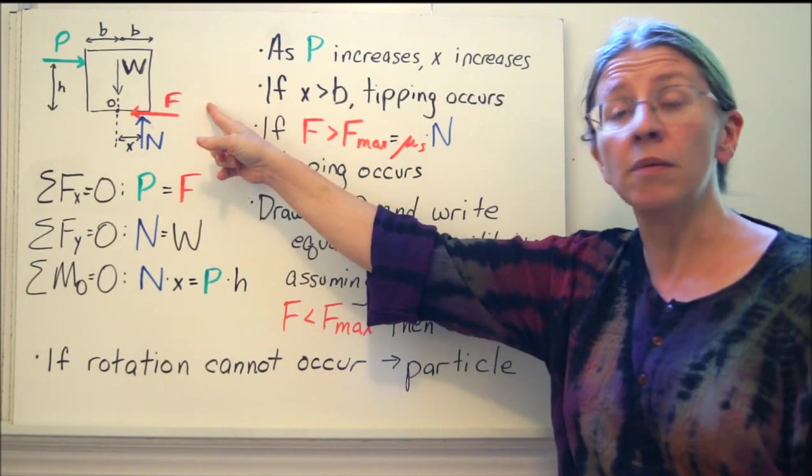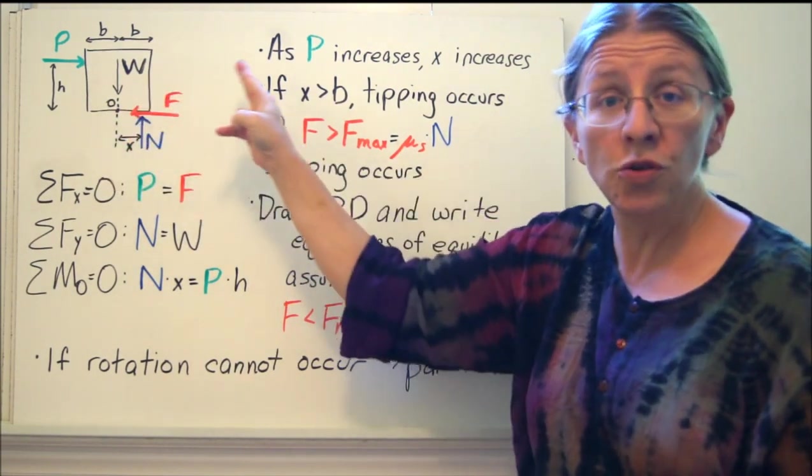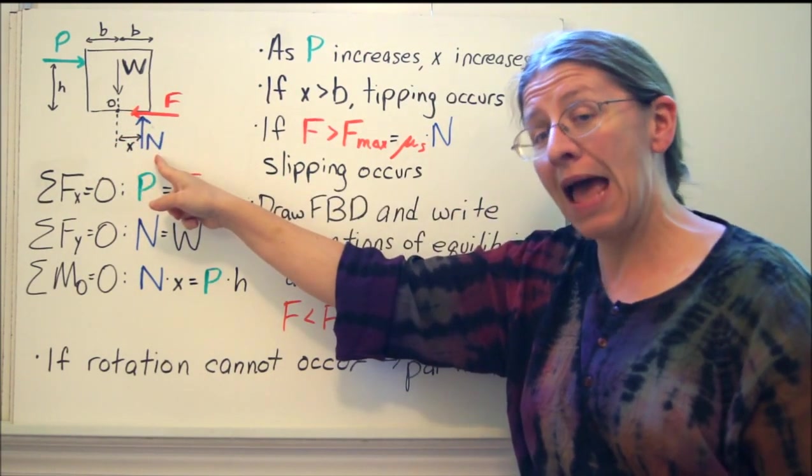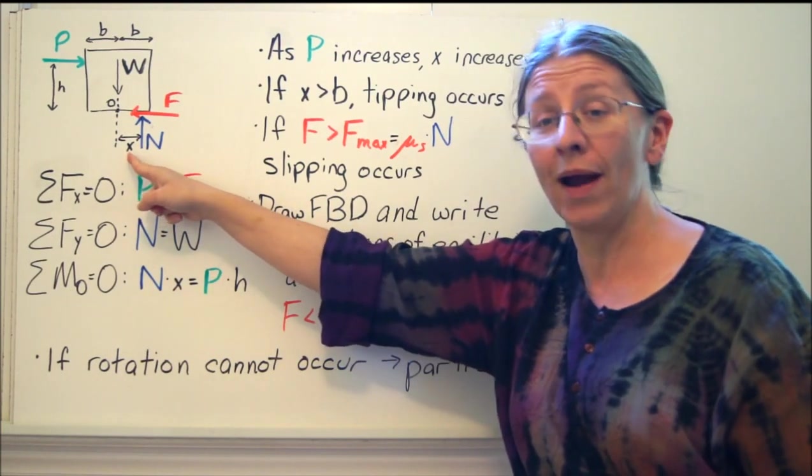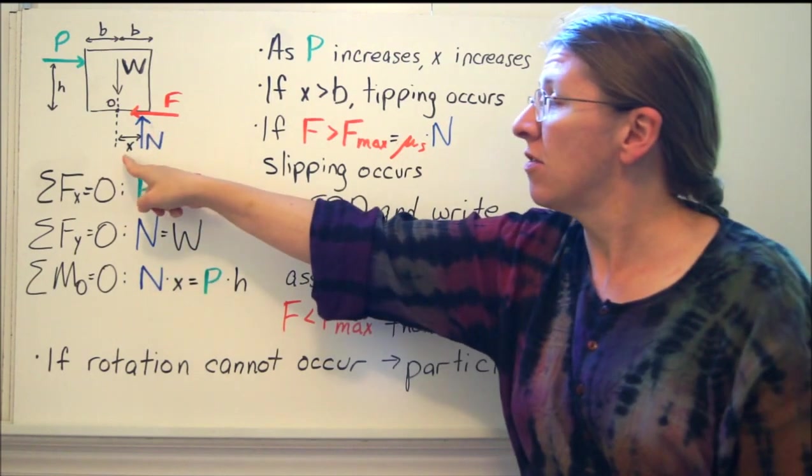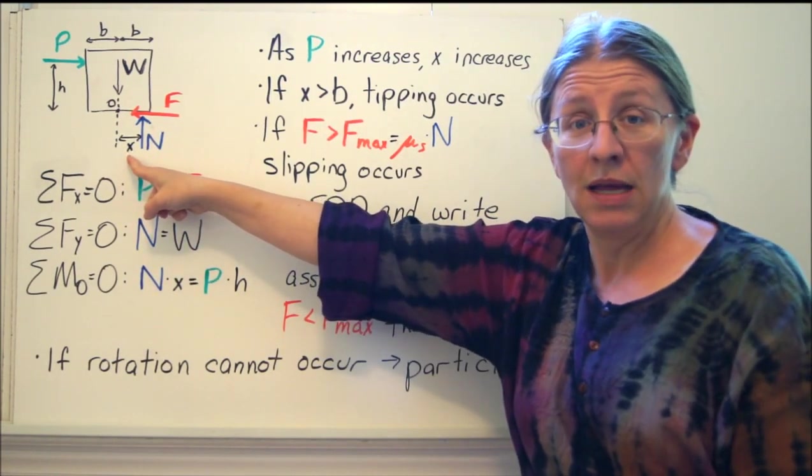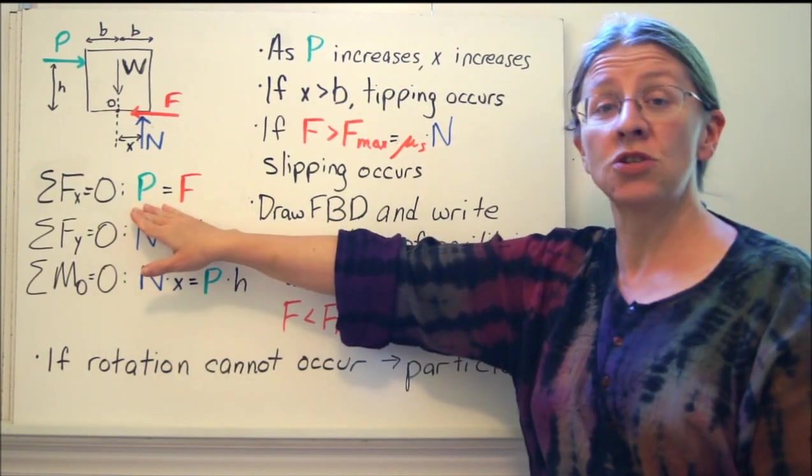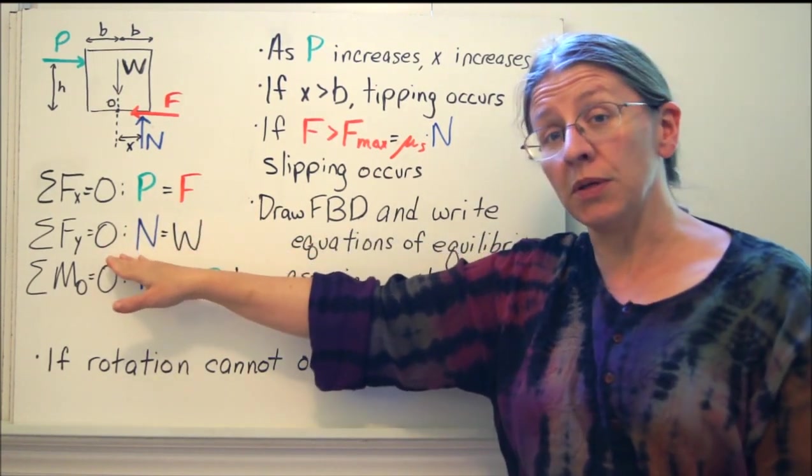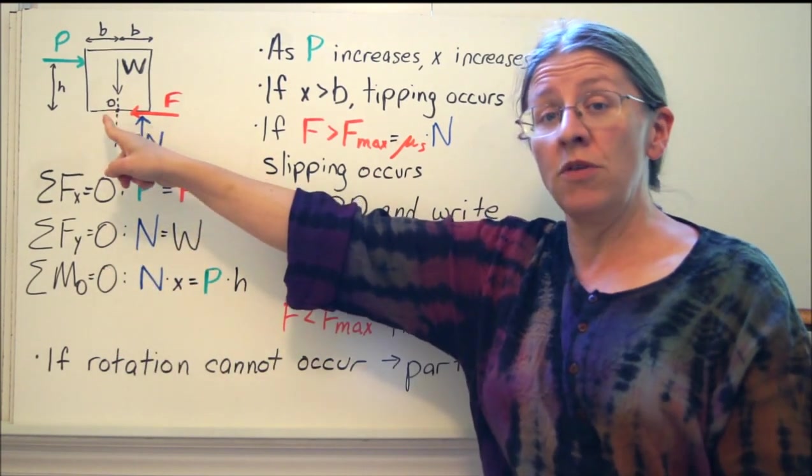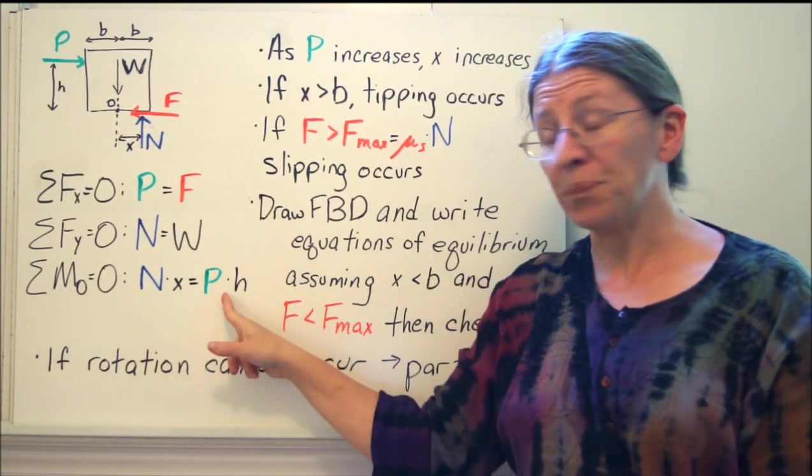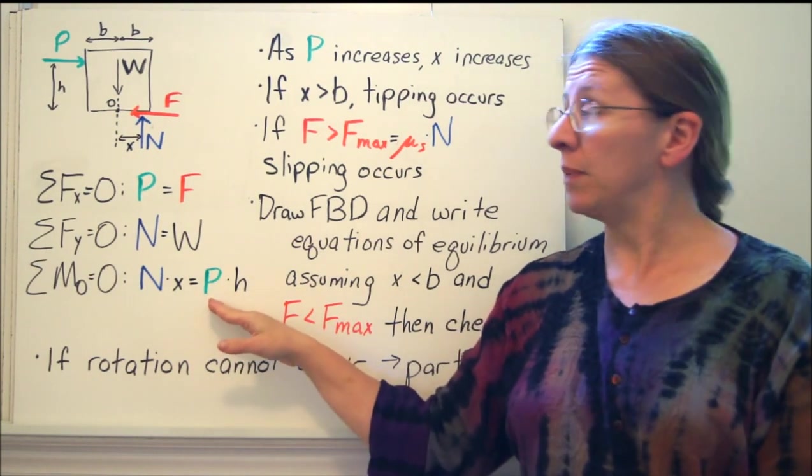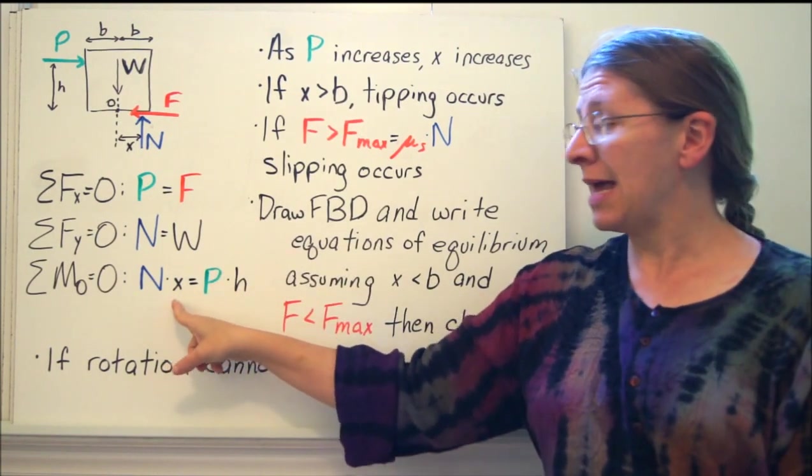Let's blow up this free body diagram a little bit more and put some distances on it. So if I say my box is 2B wide and the P is pushing at a height H, the N cannot act right under the weight. It has to act somewhere on this side of it. As P increases, this X value is going to increase as well. Anything it can to keep this in equilibrium. So let's look at what these equations are. The sum of the forces in X just tells you P equals F. The sum of the forces in Y tells you N equals W. The sum of the moments, if you take it right under the weight, tells you that N times that X is equal to P times H. If there's no X, if N acts right under the weight, you can't have a P to maintain equilibrium. As P increases, this X has to increase as well.